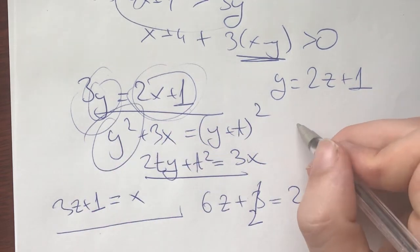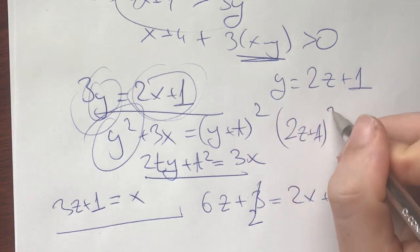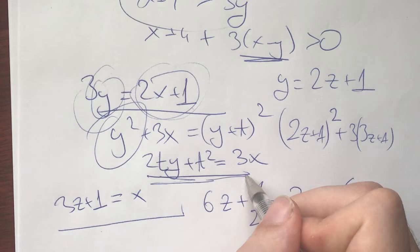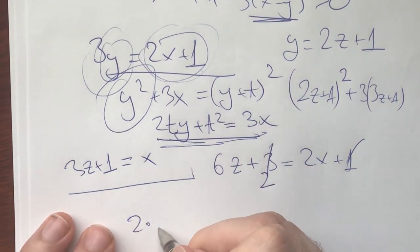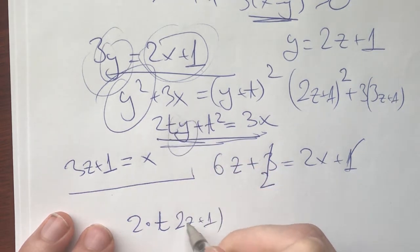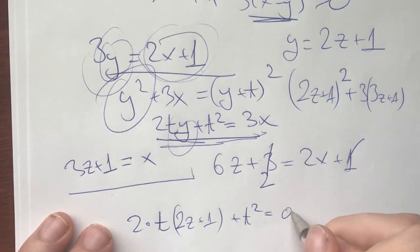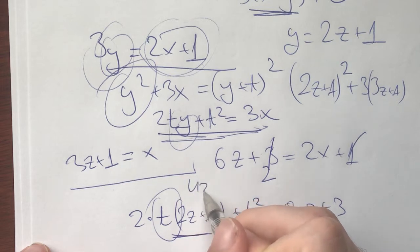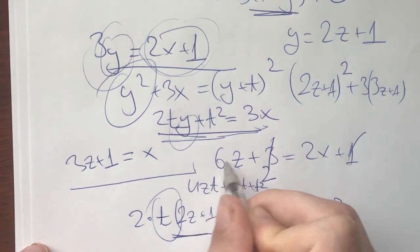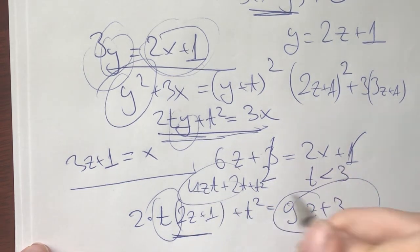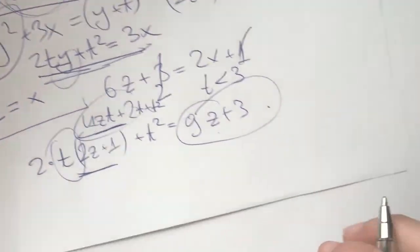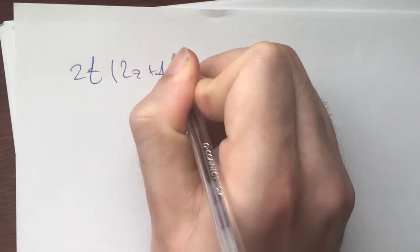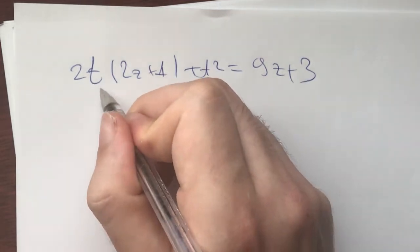This is great. And now we plug that in here. We see that we will have (2z+1)²+3(3z+1) is going to be equal to some square. So now that will give us that 2t(2z+1)+t² is going to be equal to 9z+3. And now this gives us a bound on what t can be. Because we have 4zt+2t+t² on this side and here you have 9z. So this means that t needs to be less than 3. Otherwise this side will be greater than this side. So now we just have a couple of cases.